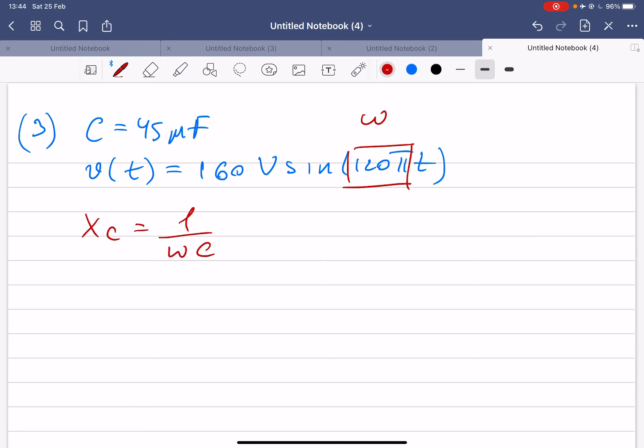Omega is given which is 120 pi, multiplied by 45 times 10 to the power minus 6 farads. So if you multiply it you should get the answer.